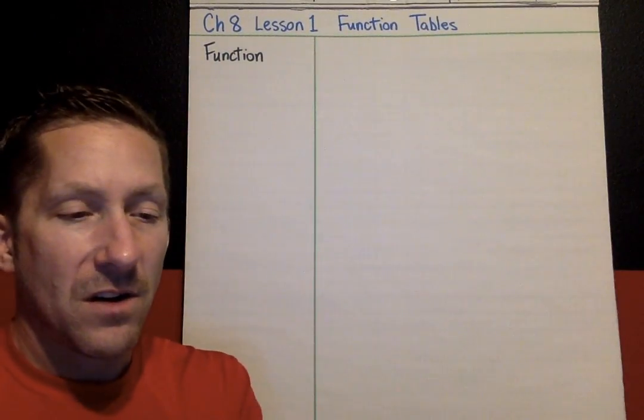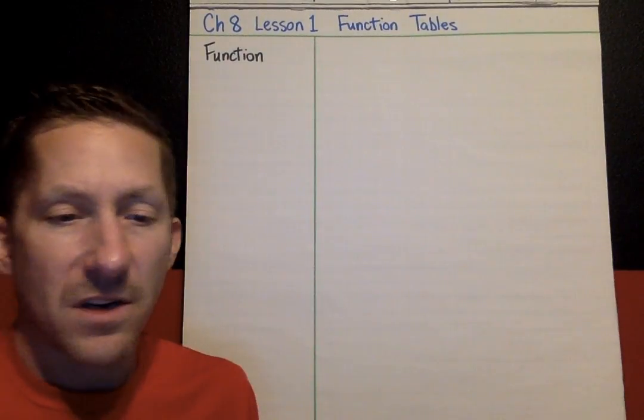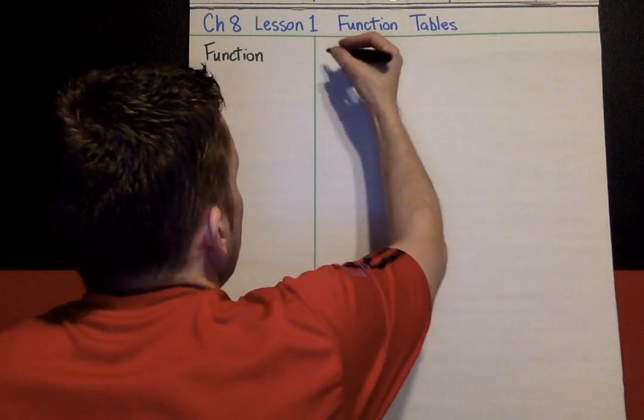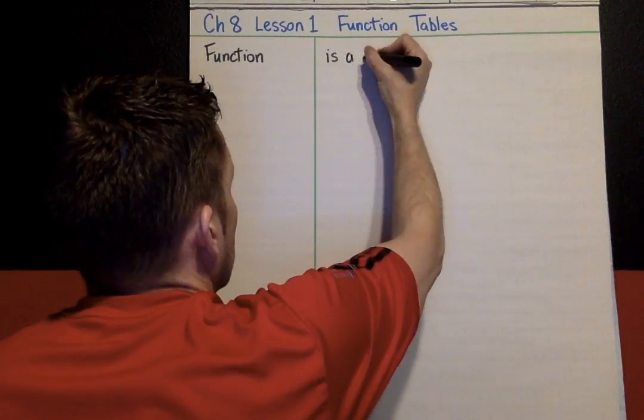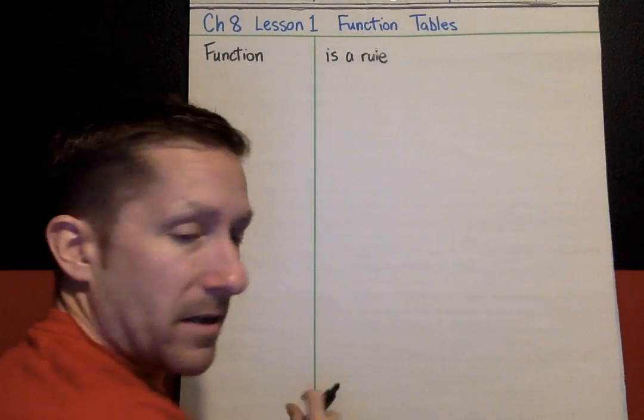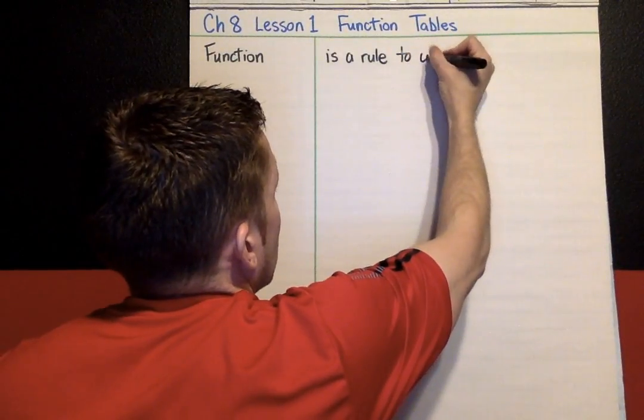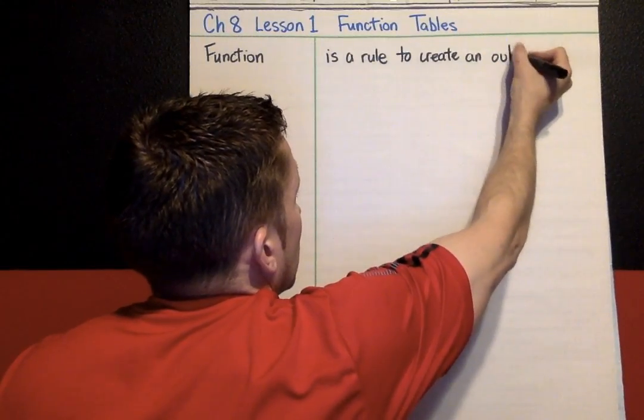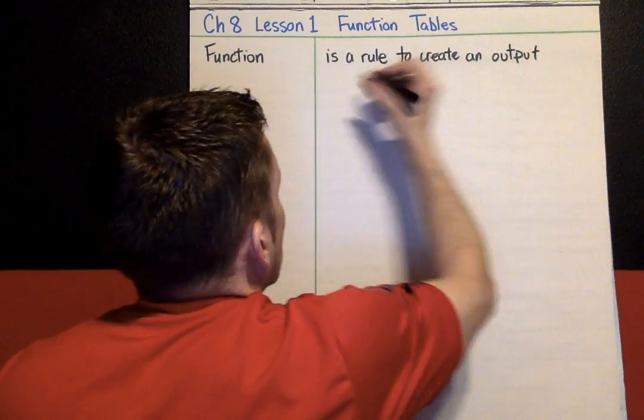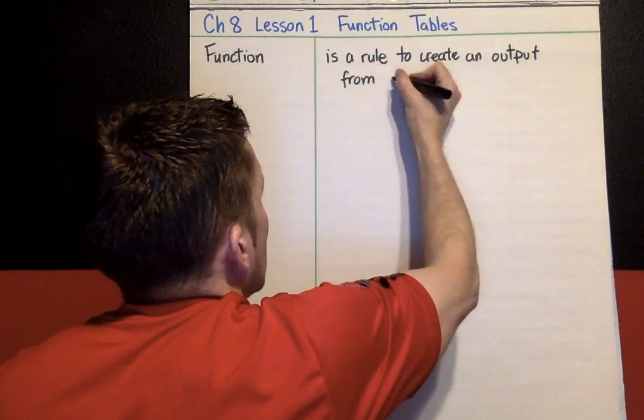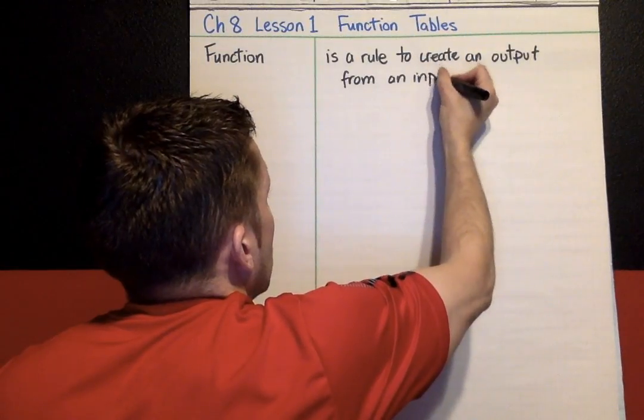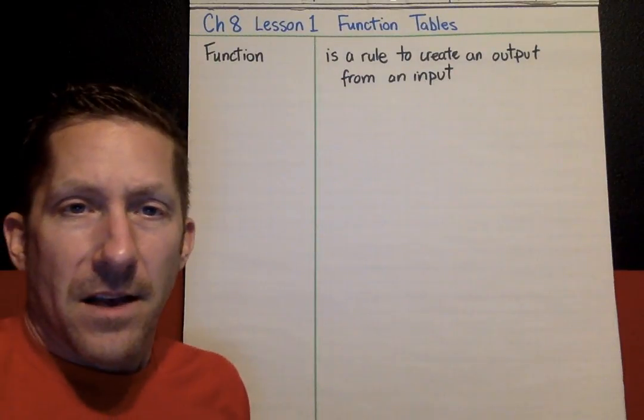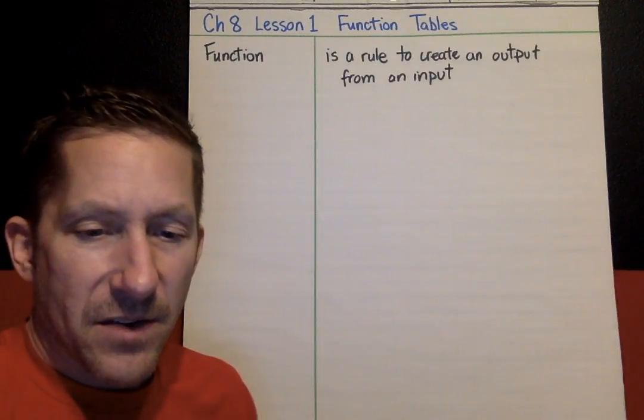The title of Lesson 1 is called Function Tables. We'll start with quite a bit of vocabulary today. A function in math is a rule. Function rule is a rule to create an output from an input. You have an input, you put it into the function, and then you get an output.